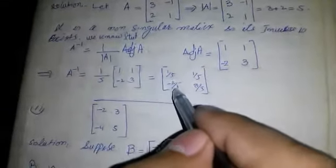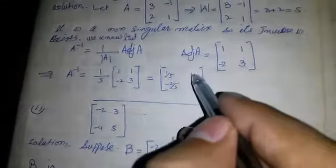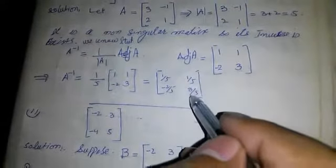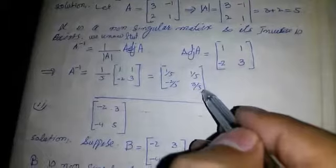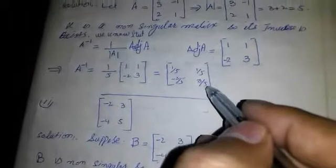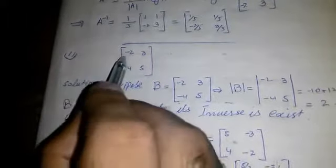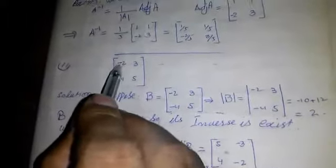So A⁻¹ is equal to (1/5) times [[1, 1], [-2, 3]], which equals [[1/5, 1/5], [-2/5, 3/5]].